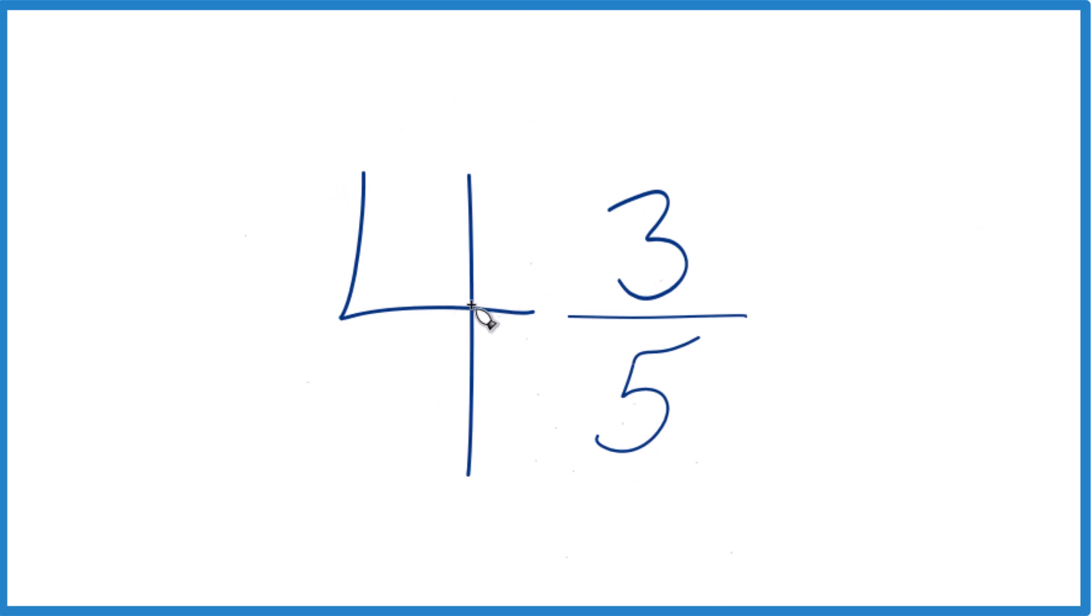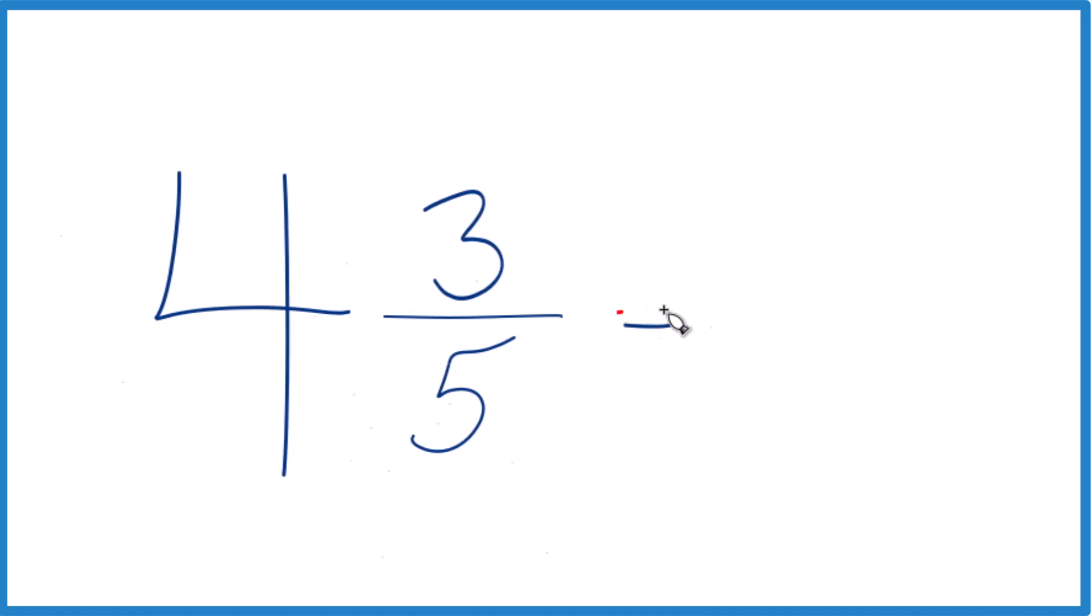So we're going to take the whole number, the 4, multiply that by 5. 4 times 5, that's 20. We take 20 plus the 3 here. That gives us 23. That's the numerator.